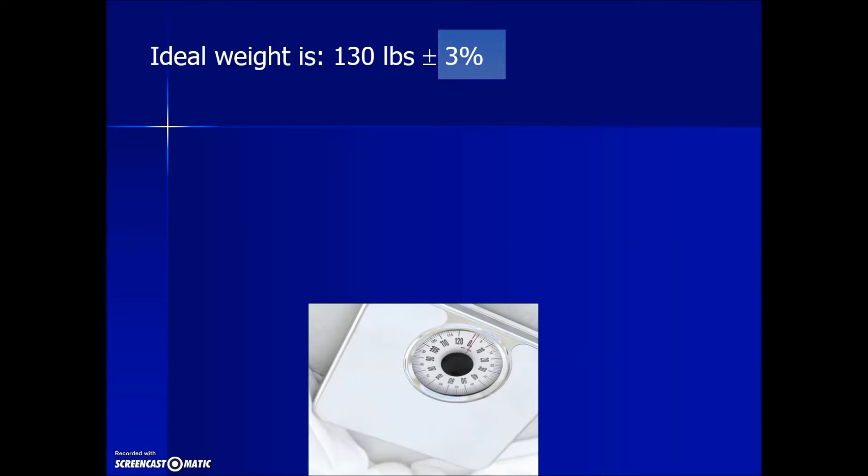We need to take the base 130 and multiply it by 3 percent. Three percent as a decimal is 0.03, and when we do the multiplication this turns into a value of 3.9 pounds. This number will replace the 3 percent variation.